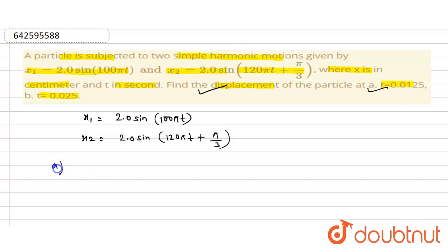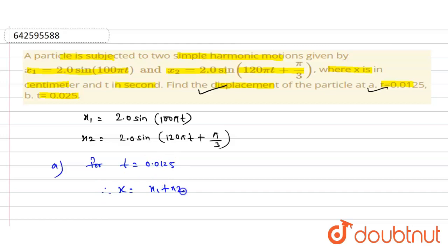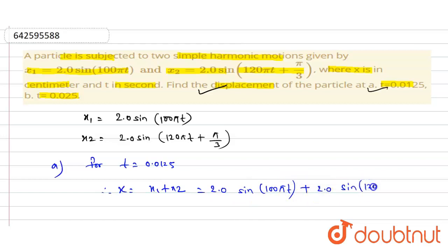In this question we have to find the displacement. For time t = 0.0125, the total displacement x equals x1 plus x2, which gives us 2.0 sin(100π t) plus 2.0 sin(120π t + π/3).